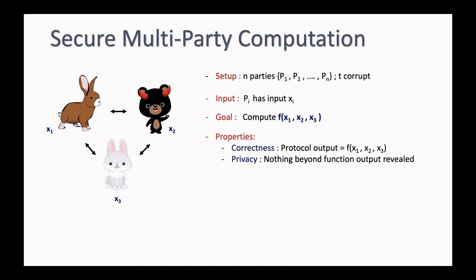An MPC protocol is realized by exchanging messages between the parties, and at some point the adversary can refuse to answer any more messages. We say that the adversary aborts the computation, and if the adversary aborts, the honest parties can exhibit different behavior, and based on that we can distinguish different notions of security.